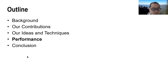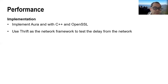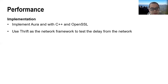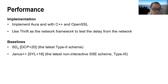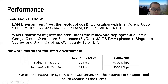Next, I will briefly introduce the performance of our SSE scheme and compare it with state-of-the-art works. We implement our scheme with C++ and OpenSSL, and use Thrift as a network framework to test network delay. We compare it with the latest Type 2 scheme, SDD, and the latest non-interactive SSE scheme, JNS+++. We evaluate the performance in both LAN and WAN settings.